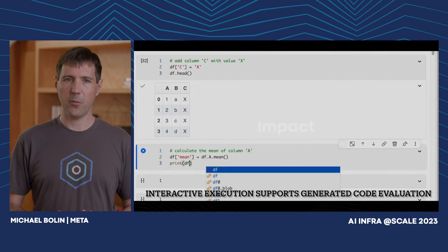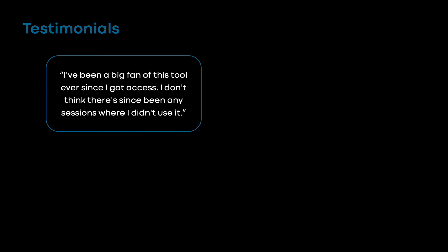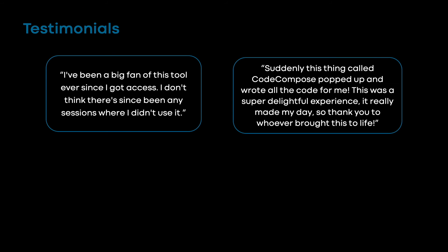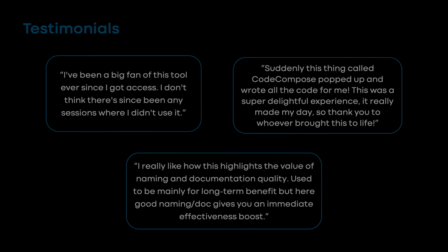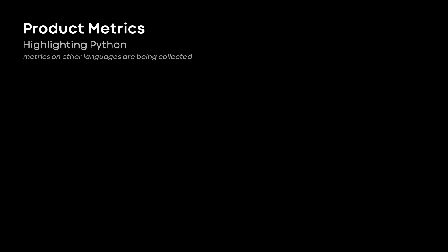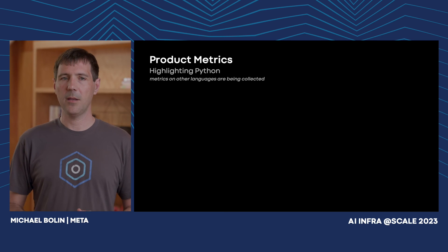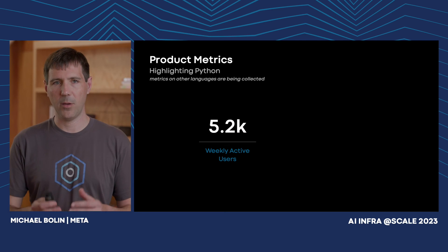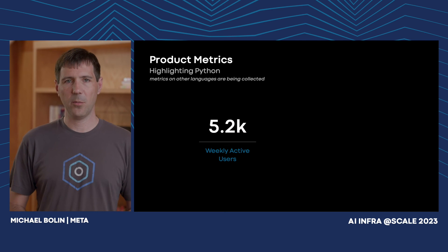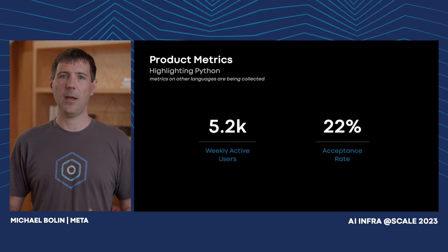Now that you have seen Code Compose in the wild, let's see what sort of impact this has had at Meta. Anecdotally, we have received a lot of positive feedback about how Code Compose has helped people write code better and faster. Python was the first language supported by Code Compose, and usage has grown steadily as we continue to improve the service. Today, thousands of employees at Meta are accepting suggestions from Code Compose every week. For suggestions visible to the user for at least 750 milliseconds, our acceptance rate is over 20% and climbing.